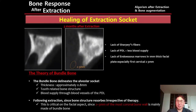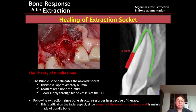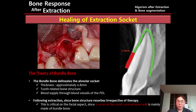After extraction, the periodontal ligament will be gone, so the blood supply to this bundle bone will be gone. This very thin bundle bone will be gone during the very early healing period after extraction. In the anterior region, 2 to 3 mm of the most coronal labial bone wall is mainly made of bundle bone, so the coronal portion of labial bone — around 2 to 3 mm — will be gone.